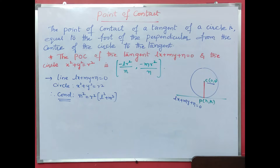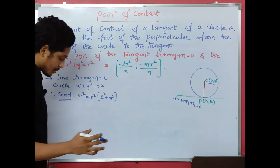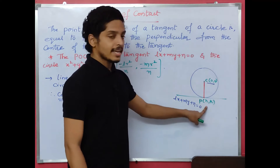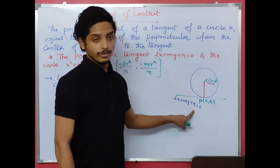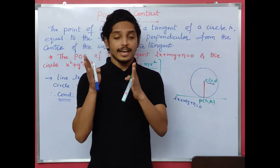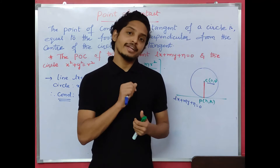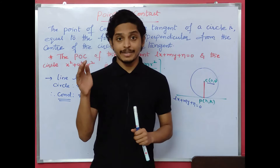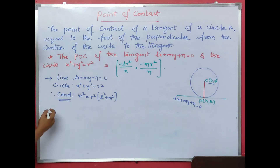If the line touches the circle, r is equal to the perpendicular distance. The foot of the perpendicular formula is: h minus x1 divided by a equals k minus y1 divided by b equals minus of ax1 plus by1 plus c, divided by a squared plus b squared.